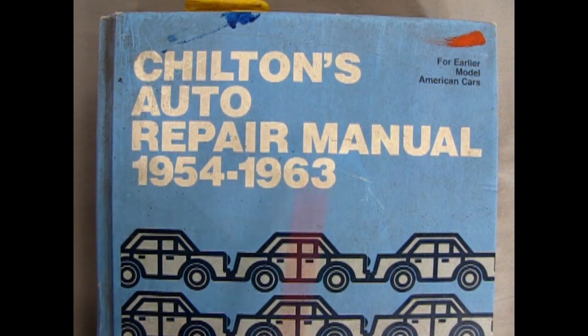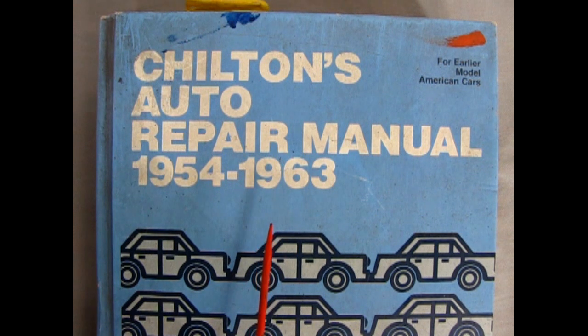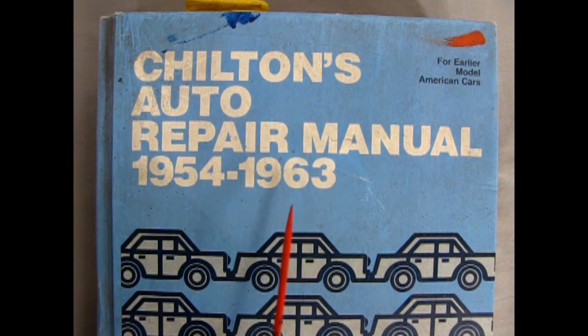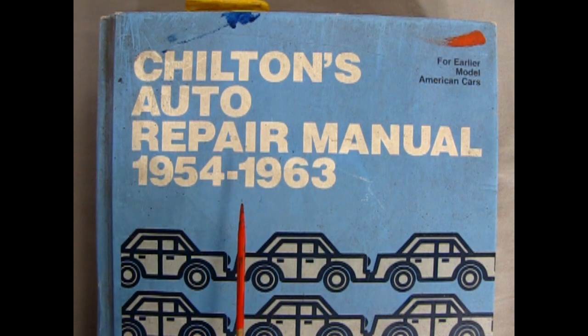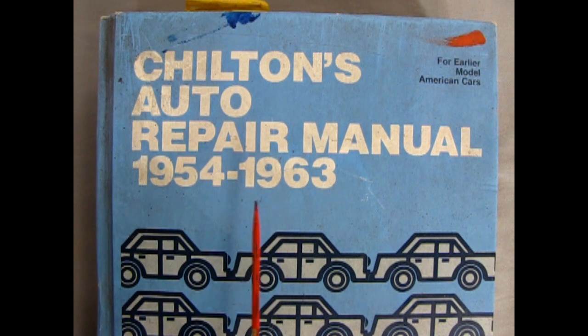Now we're going to take a look at our Chilton's Auto Repair Manual from 1954 to 1963. This book was given to me by my good friend John. And one thing to keep in mind about the AMT Trophy Series model car kits is they all came out around 1960 to 1963 era, but they would have used the hot and current motors from the time period. So something like our Ford 332 FE engine, it came out in 1958. So that would be a prime candidate for a hot rod motor of that era.